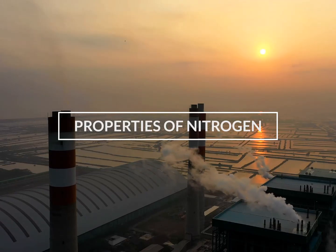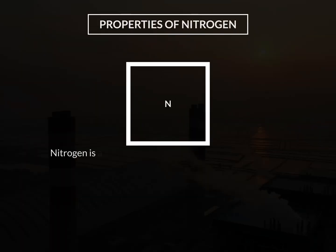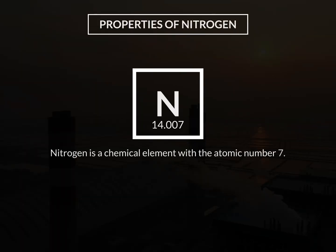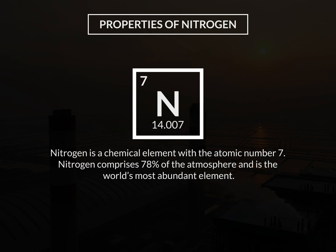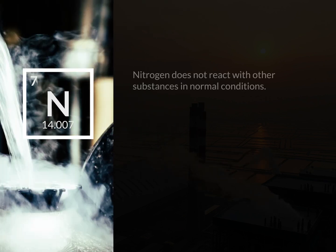Properties of Nitrogen. Nitrogen is a chemical element with the atomic number 7. Nitrogen comprises 78% of the atmosphere and is the world's most abundant element. Nitrogen does not react with other substances in normal conditions.